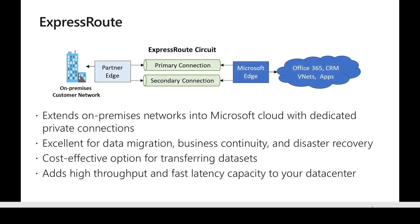When we talk about ExpressRoute, it's a way of creating dedicated private connectivity from a customer's on-premises data center to Microsoft Azure cloud. Since this provides a dedicated connectivity, there are a lot of benefits associated with it as well. Customers normally don't have to go through the internet for their connectivity, so the connection is secure and the customer can get dedicated bandwidth from the provider as well.